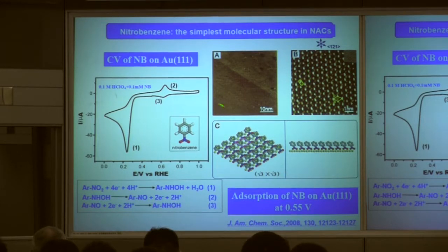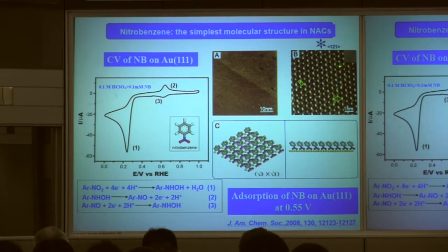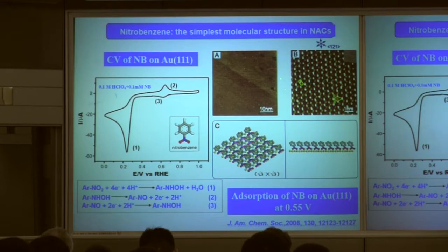Here is a large-scale STM image — you can see the surface is very flat. Here is a high-resolution STM image. From this image, you can see the gold Au(111) substrate, meaning the molecule adsorbs on the Au(111) surface. Here is the orientation relationship between the molecular layer and the gold lattice. In the molecular layer of nitrobenzene, you can find a very big bright spot with a slightly darker, smaller spot.